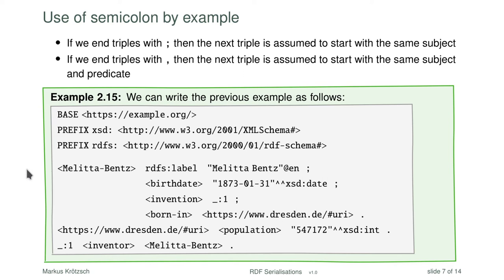For instance, I only mention MelittaBenz once, then write 'rdfs:label' and the label value, then put a semicolon, and continue with 'birthdate' and the birthdate value, another semicolon, 'invention' blank-node, 'born-in' URI, and only after finishing do I put the full stop. This is completely optional — it doesn't impose any object structure or grouping of triples. It is really just a syntactic abbreviation for the four triples, but one which simplifies life a lot, at least for human users.